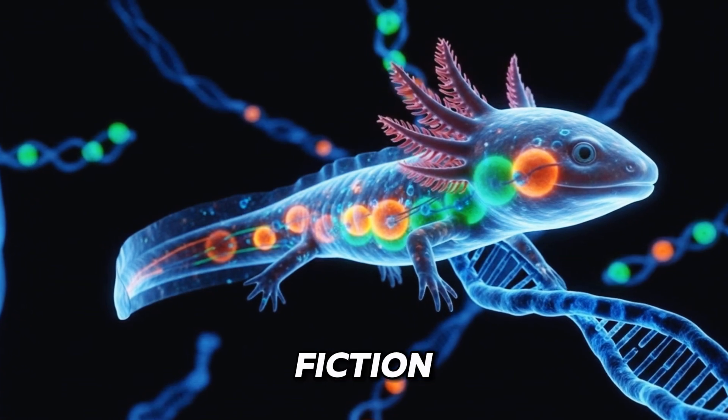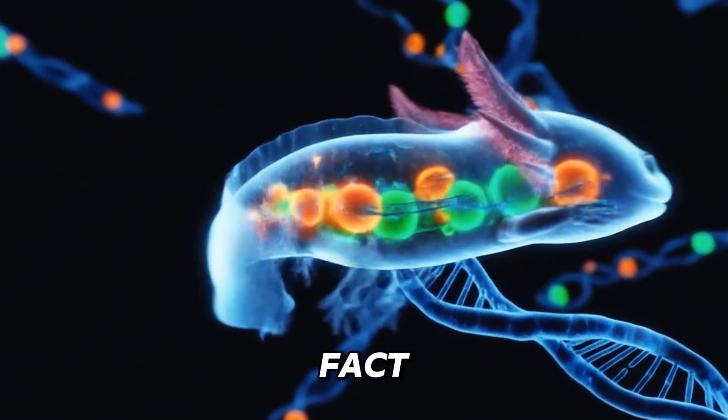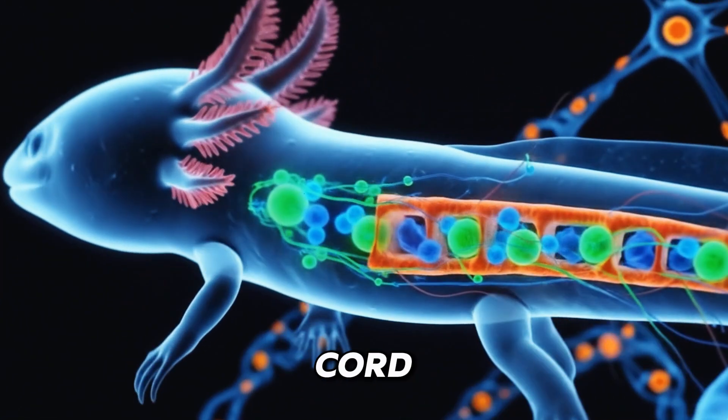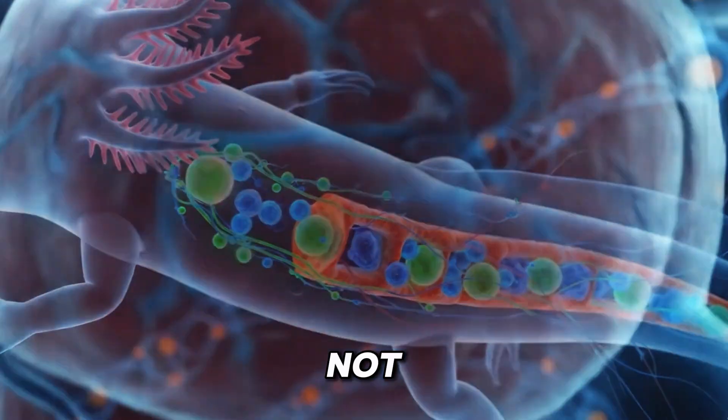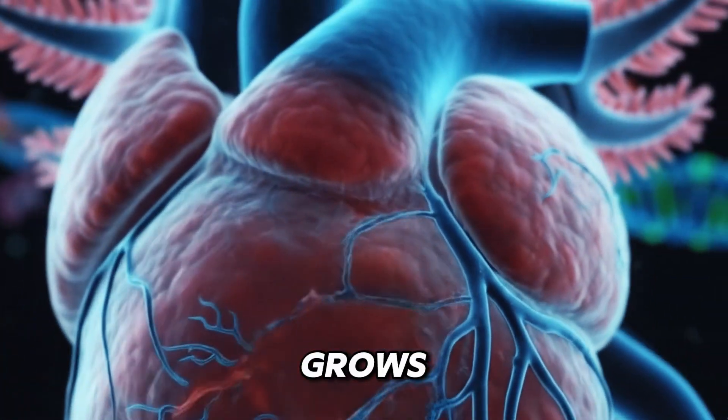This is not science fiction. This is scientific fact. If you cut the spinal cord of an axolotl, a type of salamander, it does not become paralyzed. It grows a new one.